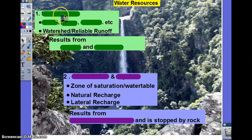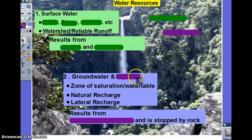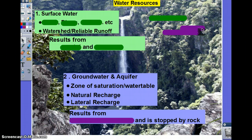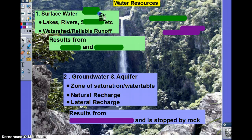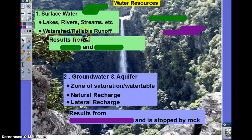Reviewing our resources of water, we have two main categories: surface water and groundwater. Aquifers would be another way to reference groundwater. Surface water includes lakes, rivers, streams, etc., and we're going to talk about watershed and reliable runoff. It results from precipitation or the melting of snow.